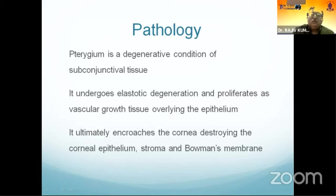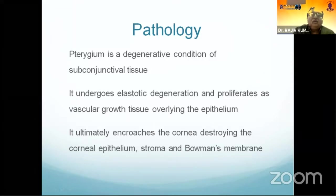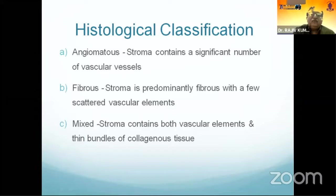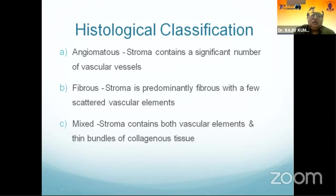Pathologically, pterygium is a degenerative condition of subconjunctival tissue, which undergoes elastotic degeneration and proliferates as vascular fibrous tissue overlying the epithelium, ultimately encroaching on the cornea and destroying the corneal epithelium, stroma, and Bowman's membrane. Histologically, it can be classified as angiomatous (stroma with significant vascularity), fibrous (predominantly fibrous stroma with few vascular elements), or mixed (both vascular elements and thin bundles of collagen).